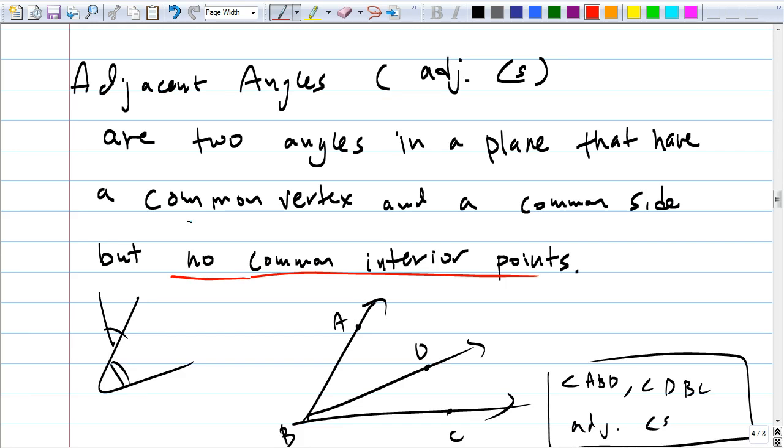So for example, angle ABC and ABD aren't adjacent. Good. Because ABD and ABC share common interior points. Exactly.